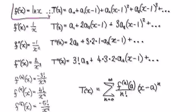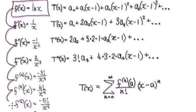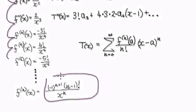We start out with our original function. Differentiating gives us this. Differentiate it again, again, again, and so on. Now if you look at the general case, if you differentiate it n times, then it would be this.